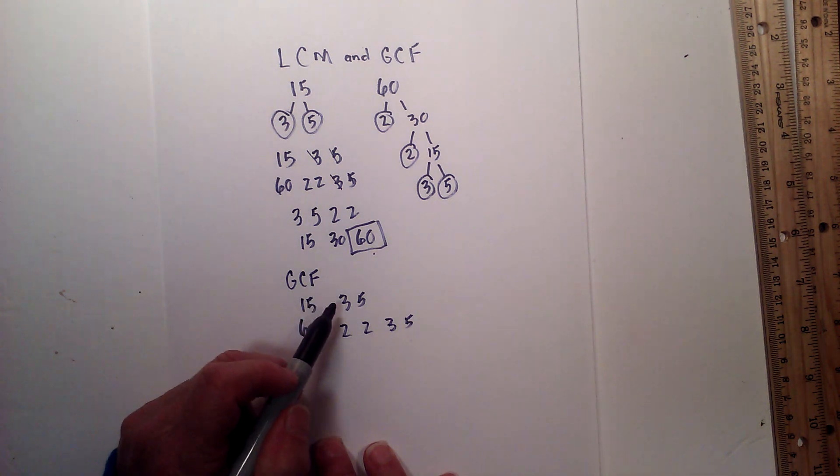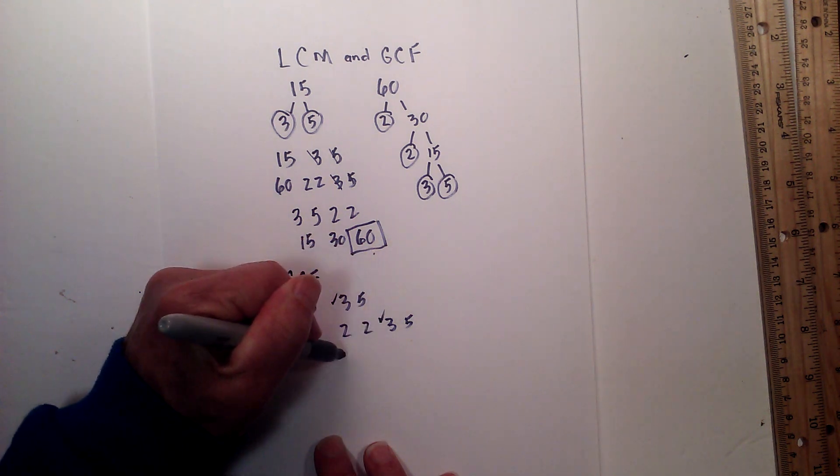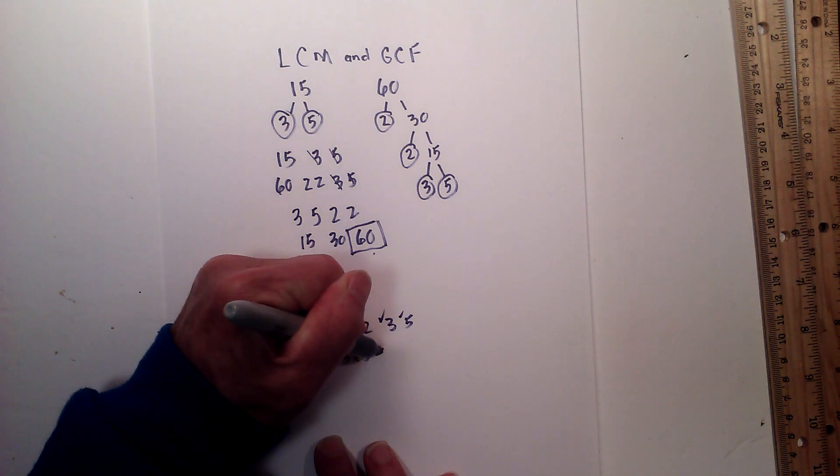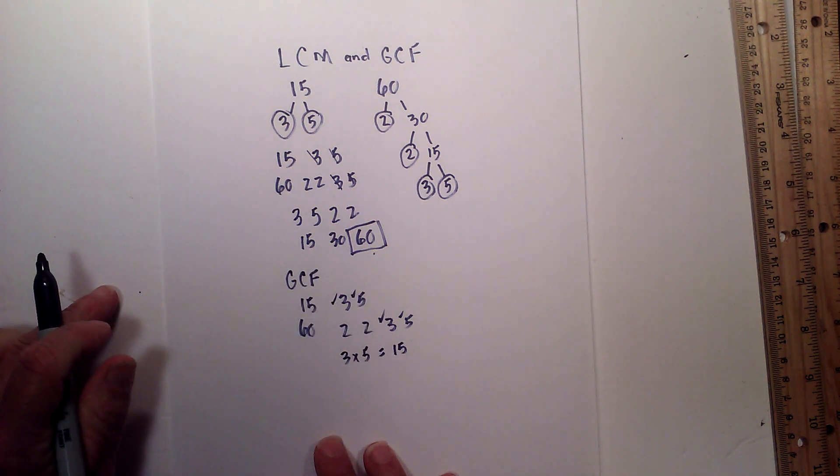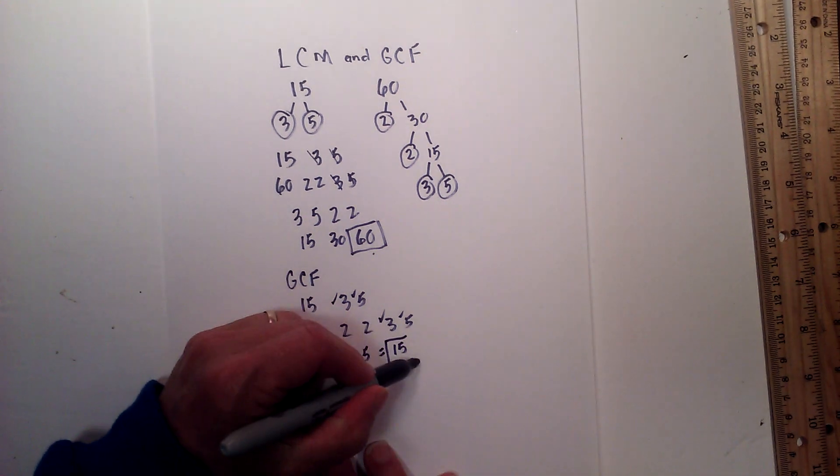So 3 is found in both, 5 is found in both. So it'll be 3 times 5, which is 15. So the GCF of 15 and 60 is 15.